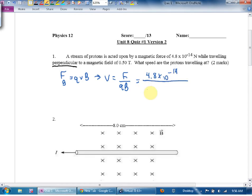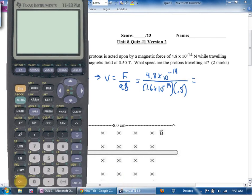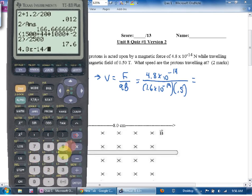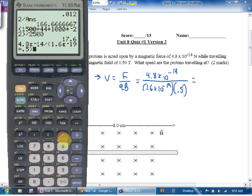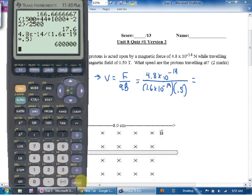The speed is equal to 4.8 times 10 to the negative 14 divided by - oh they didn't give me the charge did they? No, because it's a proton and that's on my sheet, it's the elementary charge of 1.6 times 10 to the negative 19 coulombs. And the magnetic field is pretty big, 0.5 teslas. So 4.8 times 10 to the negative 14 divided by bracket 1.6 times 10 to the negative 19 times 0.5.